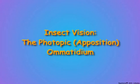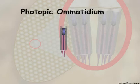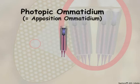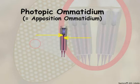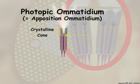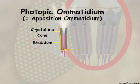Insect species that are active during the daytime, when light is abundant, have photopic amatidia in their compound eyes. The photopic amatidium was earlier called an apposition amatidium because the base of the crystalline cone is in direct contact, or in apposition, to the rhabdom. In photopic amatidia, incoming light is focused on the base of the crystalline cone and directly onto the rhabdom, the light-sensitive sensory region of the retinula cells.